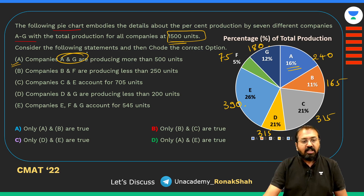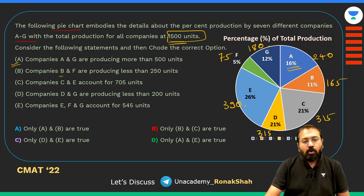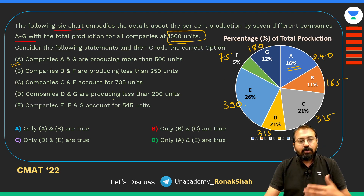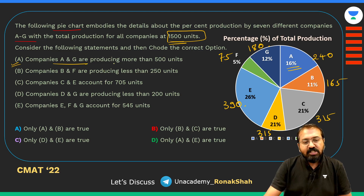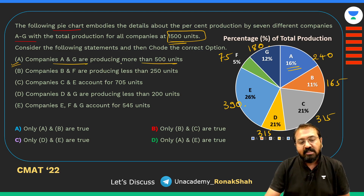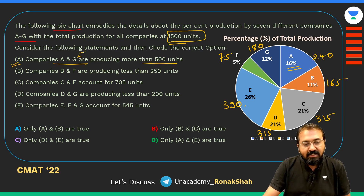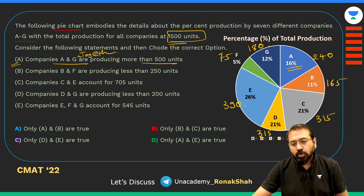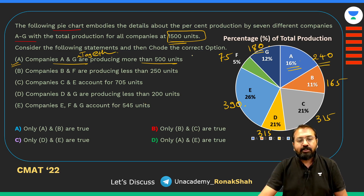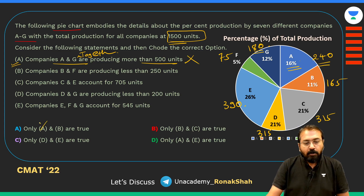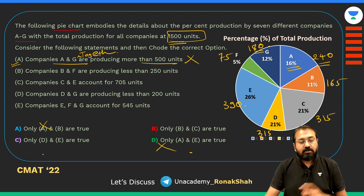Now if you look at any of the statements, they are all similar in form. For Statement A — companies A and G are producing more than 500 units together — A is 240 and G is 180, so together it's 420, which is not more than 500. So Statement A is not correct.